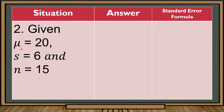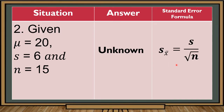For the next situation, we are given a population mean of 20, a sample standard deviation of 6, and a sample size of 15. Let us check the given. In solving for the population variance, we need the population mean and the population size N. Although the population mean is given, the population size N is not given — we only have the sample size n which is 15. Therefore it is impossible for us to solve for the population variance. In this situation, the variance is unknown, and the standard error formula to be used is given by this formula.